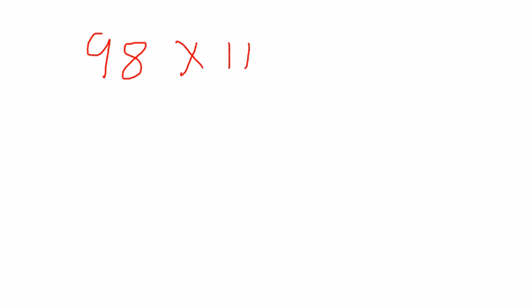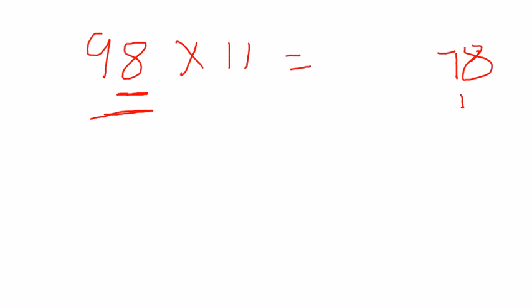Let's start with an example: multiply 98 by 11. Starting from the rightmost digit, 8 × 1 = 8. Then sum 9 + 8 = 17, so write 7 with 1 as carry. Since we started with a single bar, we end with a single bar. Now 9 × 1 = 9 plus 1 carry = 10. The answer is 1078.